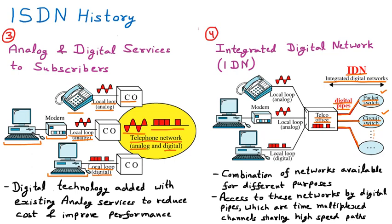On the customer side, the same lines exist as before: an analog local loop with a telephone for voice calls, another analog local loop with a modem for internet access, and a direct digital line for internet access — the same three options as in the third stage. Beyond the telecom office, the digital pipes are added. This is the IDN — Integrated Digital Network.